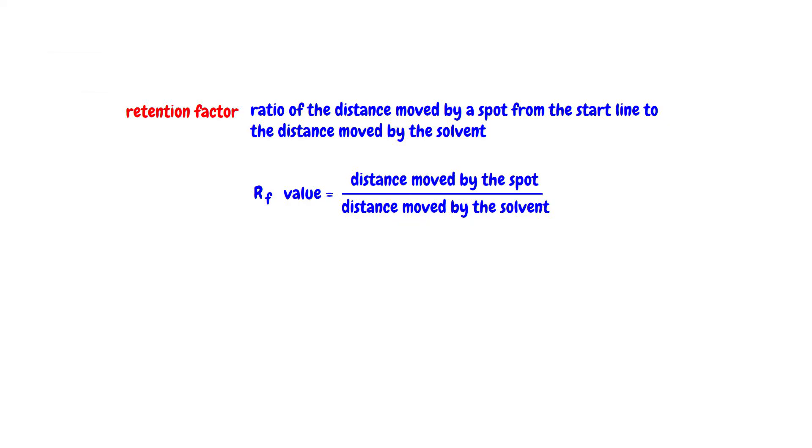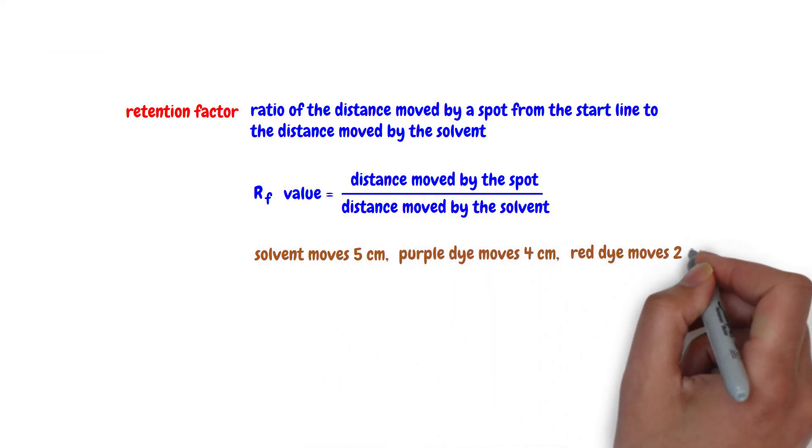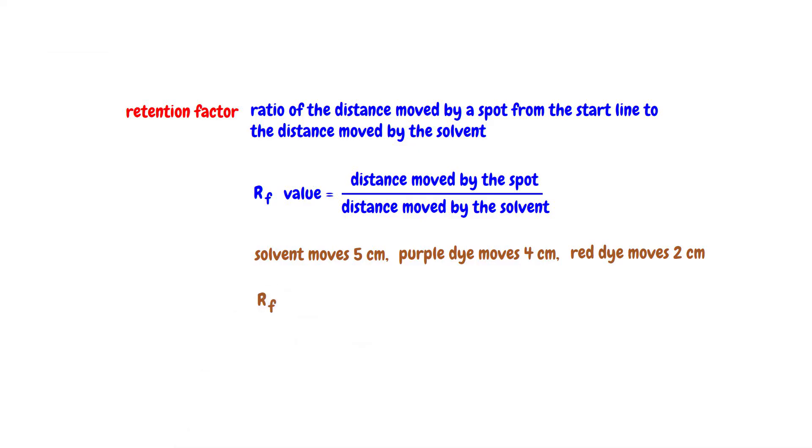For a practical application of RF values, consider a scenario where the solvent moves 5 centimeters on the paper, the purple dye moves 4 centimeters, and the red dye moves 2 centimeters. The RF value of the purple spot is calculated as 4 over 5 while the RF value of the red spot is 2 over 5.